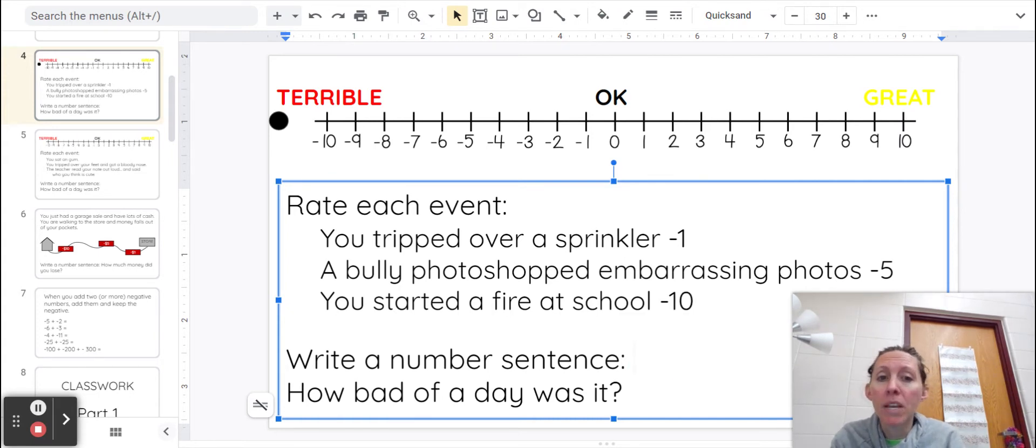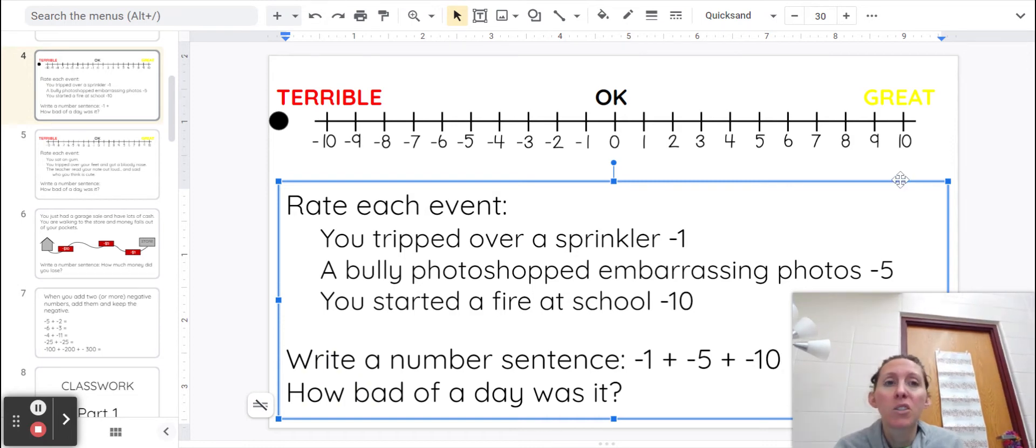Alright, so our number sentence would be negative one, and then negative five, and then negative 10. So we are going to be adding those negative things together.